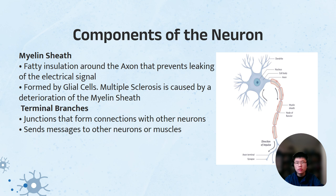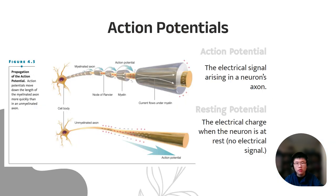The terminal branches are junctions that form connections with other neurons, and they send messages to other neurons or muscles. We'll be taking a look at this process in depth soon.